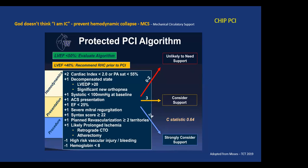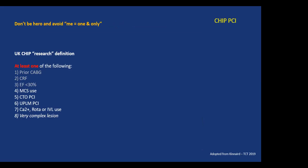This is the Washington State University protocol where you score each factor and get a final total score, which determines whether you are unlikely to need support if less than 2, should strongly consider support at 3, and definitely use support if more than 4. But for those who understand statistics, the C-statistic is 0.64 — only slightly better than flipping a coin, which would be a C-statistic of 0.5.